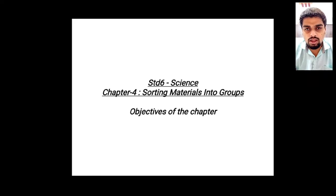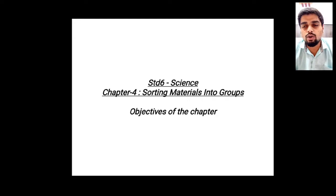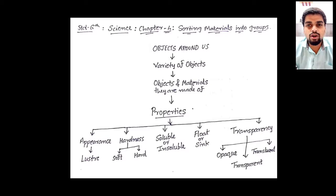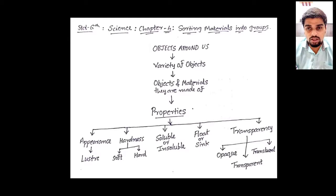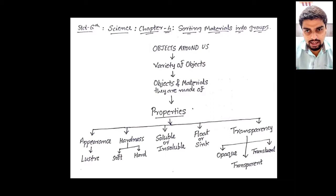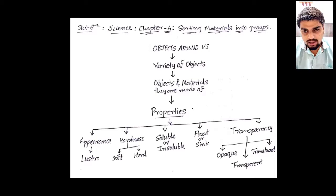In this chapter you are going to learn about different types of objects around us. As we have already discussed in Chapter 1, there is a variety of food available, and in Chapter 2 there are varieties of clothes available. So in this chapter we are going to learn about varieties of objects around us — many different types of objects made up of different materials, different shapes, and different sizes.